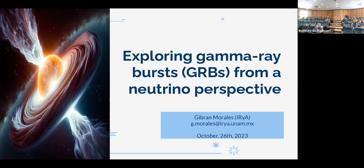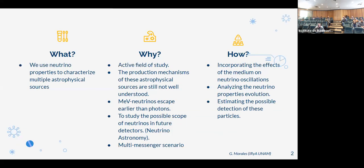Hola a todos. En esta charla voy a platicar un poquito de cómo podemos estudiar algunas fuentes astrofísicas con el uso de neutrinos. Me gustaría empezar contestando estas tres preguntas: ¿Qué hacemos? ¿Cómo lo hacemos? ¿Por qué lo hacemos? Básicamente usamos las propiedades de los neutrinos para caracterizar las regiones más internas de algunas fuentes astrofísicas. ¿Por qué? Pues representa un campo activo de estudio.